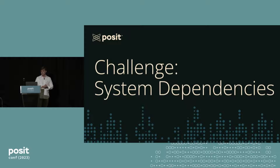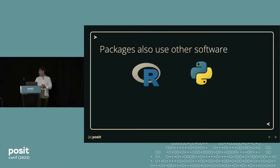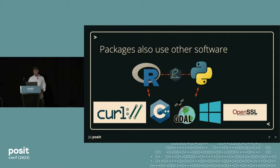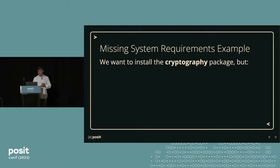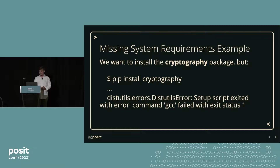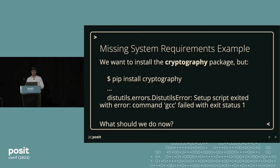The next challenge I want to talk about is system dependencies. Like packages also use other packages, packages also use other software. You can have R that relies on Python using reticulate, but R and Python can also rely on a bunch of different pieces of software. Your Python code might only work on Windows, your R code might only work with a specific version of C++, Python might require OpenSSL — whatever it is. This can make it pretty hard to move these things around. As an example, say we want to install the cryptography package in Python. We run pip install cryptography and get some esoteric error that we don't have something installed. We can Google how to install GCC and try the command again, or we can try to find a binary that's pre-installed.